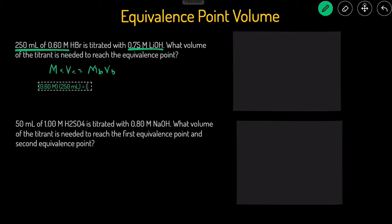The molarity of the base is 0.75 molar. And then the volume of the base, that's what we're trying to solve for. That's VB. So to do this, we can just divide both sides by 0.75. So it'll be 0.6 times 250 divided by 0.75. And that gives us 200. So volume of the base that's needed is 200 milliliters. And that's the volume that's needed to reach the equivalence point.